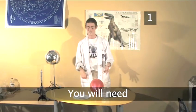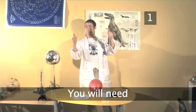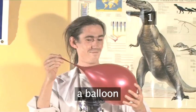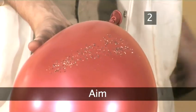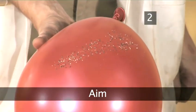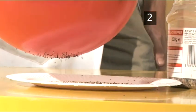Step 1. You will need the following apparatus: a balloon, some ground black or white pepper, and a plate. The aim of this experiment is to demonstrate static electricity in action.